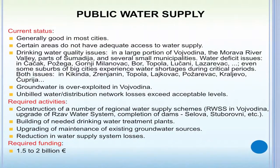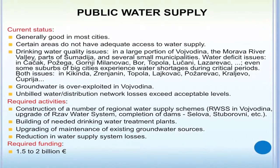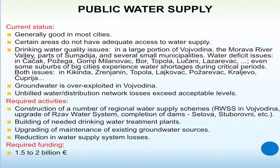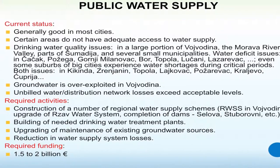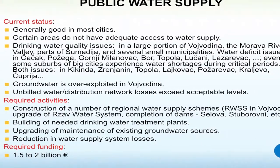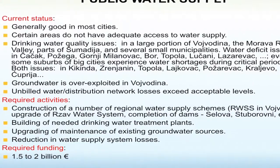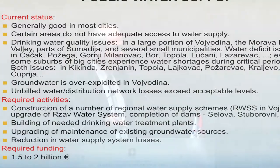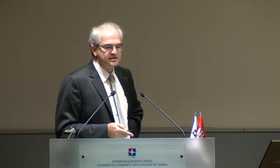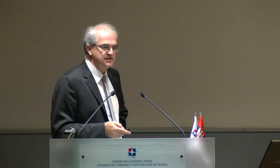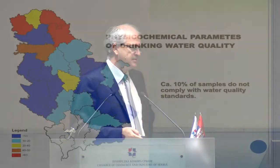Public water supply, although facing problems, is still good in many cities. People drink good quality water, but there are problems particularly in the northern part of the country in Vojvodina, some problems in the Morava river basin, and summer month shortages in some cities. There are also problems with losses in networks above acceptable levels. Our estimation is that about 1.5 to 2 billion euros are needed to meet the requirements of activities regulating public water supply. Vojvodina is the area with the most problems regarding water quality.